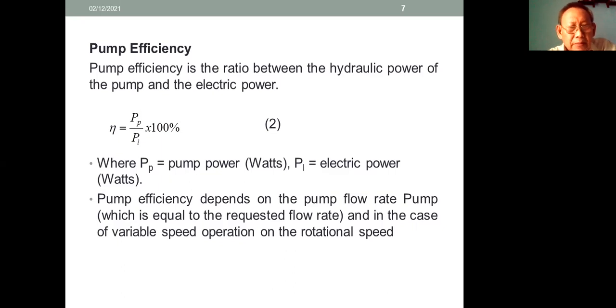η = PP / PL × 100%, where PP is pump power in unit watts, PL is electric power in unit watts. Pump efficiency depends on the pump flow rate, which is equal to the requested flow rate, and in the case of variable speed operation, on the rotation speed.